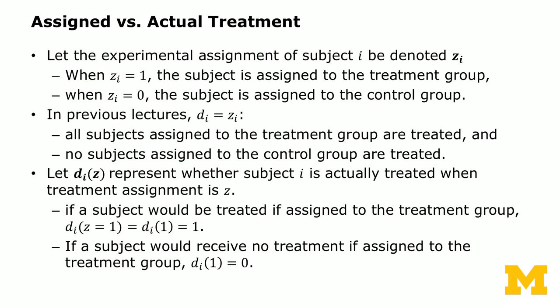Let's define assigned versus actual treatment. Assigned treatment is also called intent to treat, and actual treatment is called treated. We'll use the same notation as before. We let the experimental assignment of subject i be denoted as zi — an indicator variable. When zi equals 1, the subject is assigned to the treatment group; when zi equals 0, the subject is assigned to the control group. In previous lectures, we set di equals zi.